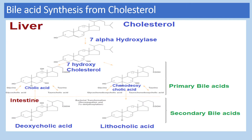In the synthesis of bile acids from cholesterol, the first step is 7-alpha hydroxylation of cholesterol. Cholesterol is hydroxylated at the 7th position with the help of the enzyme 7-alpha hydroxylase to yield a compound called 7-alpha hydroxycholesterol.